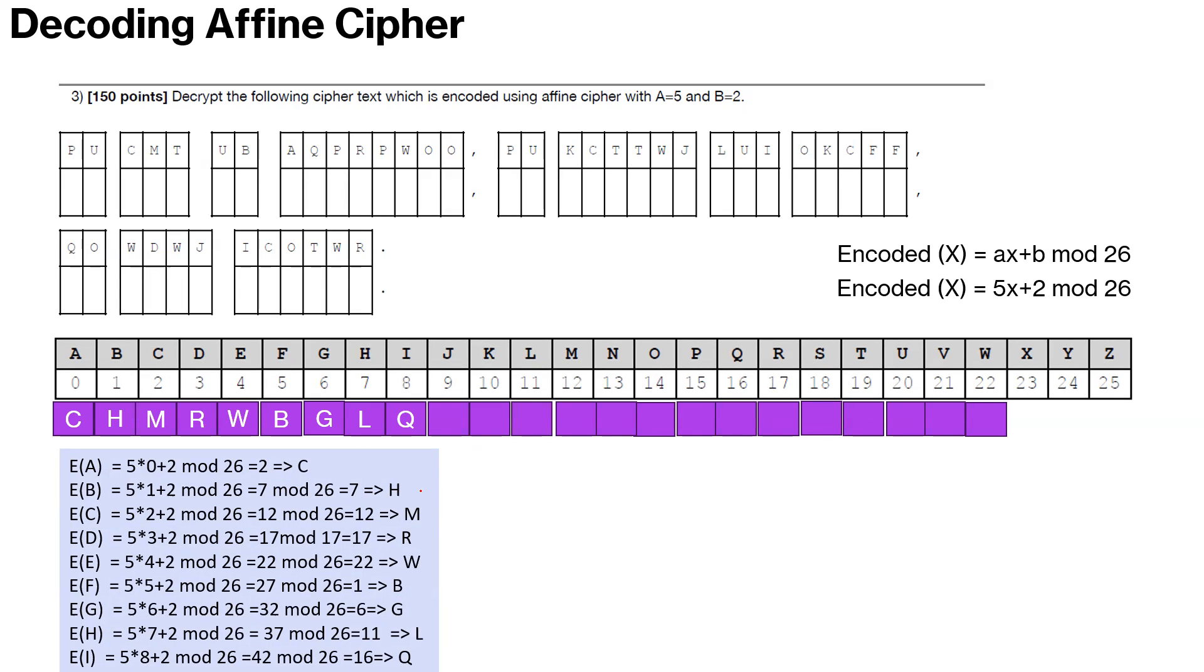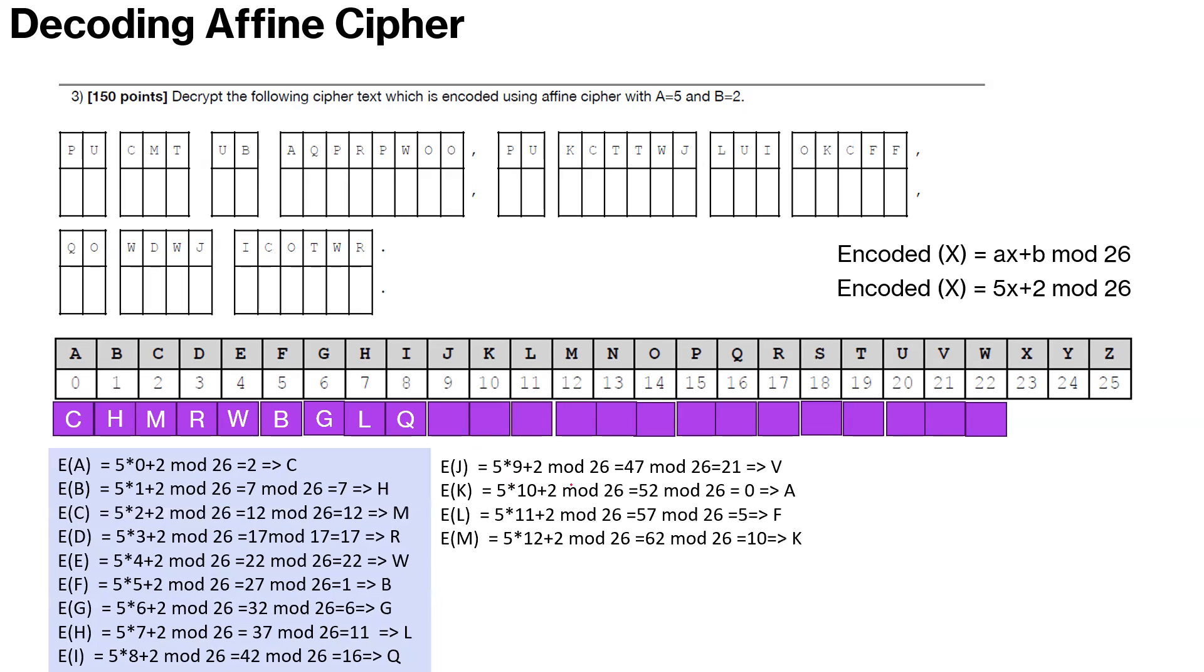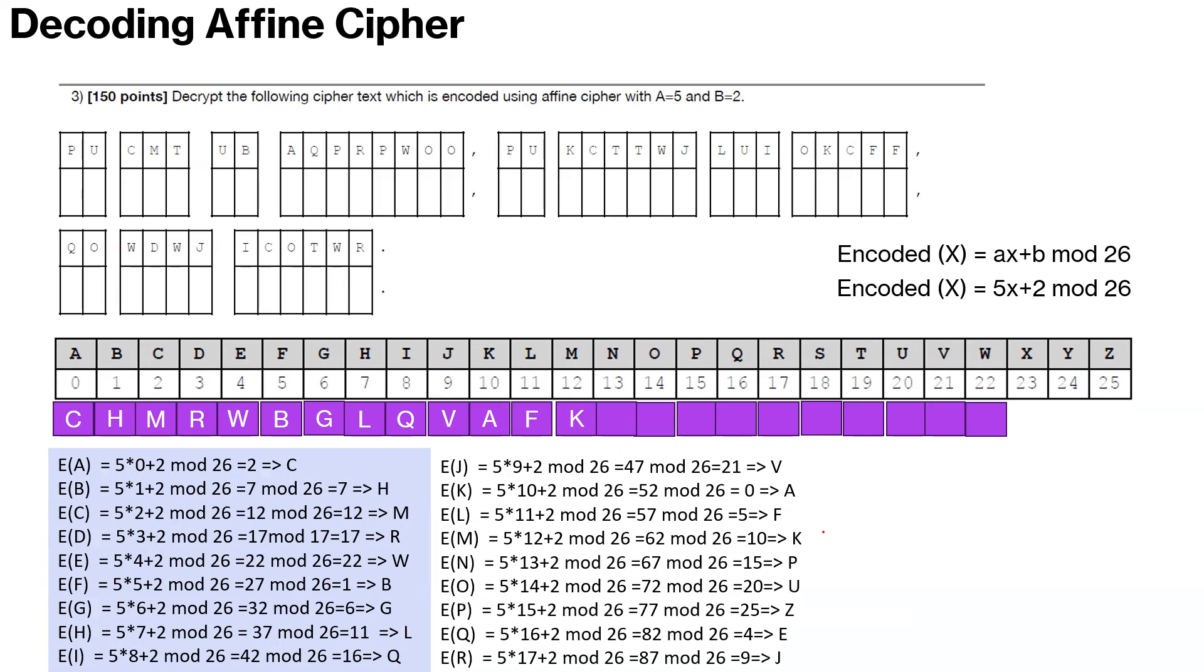For I and H you keep going. Once you're done with this, continue to J. J is 5 times 9, 45 plus 2, 47. 47 mod 26 is 21, so 21 is V. So you keep going like this. You find more decoded alphabets.